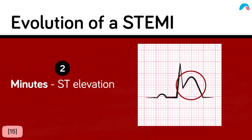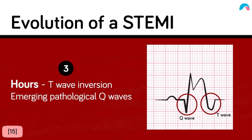As the ST segment comes down within 12 to 24 hours, the T wave can now invert and it's possible to see on the ECG. It's usually during this time that the pathological Q wave will also develop.